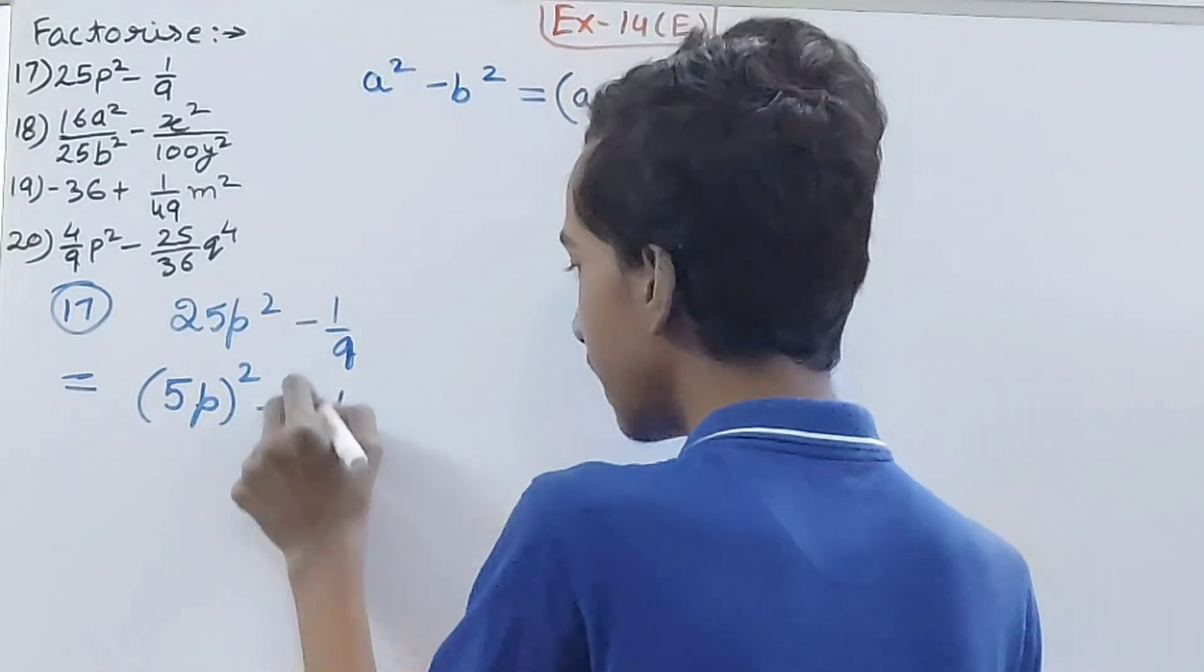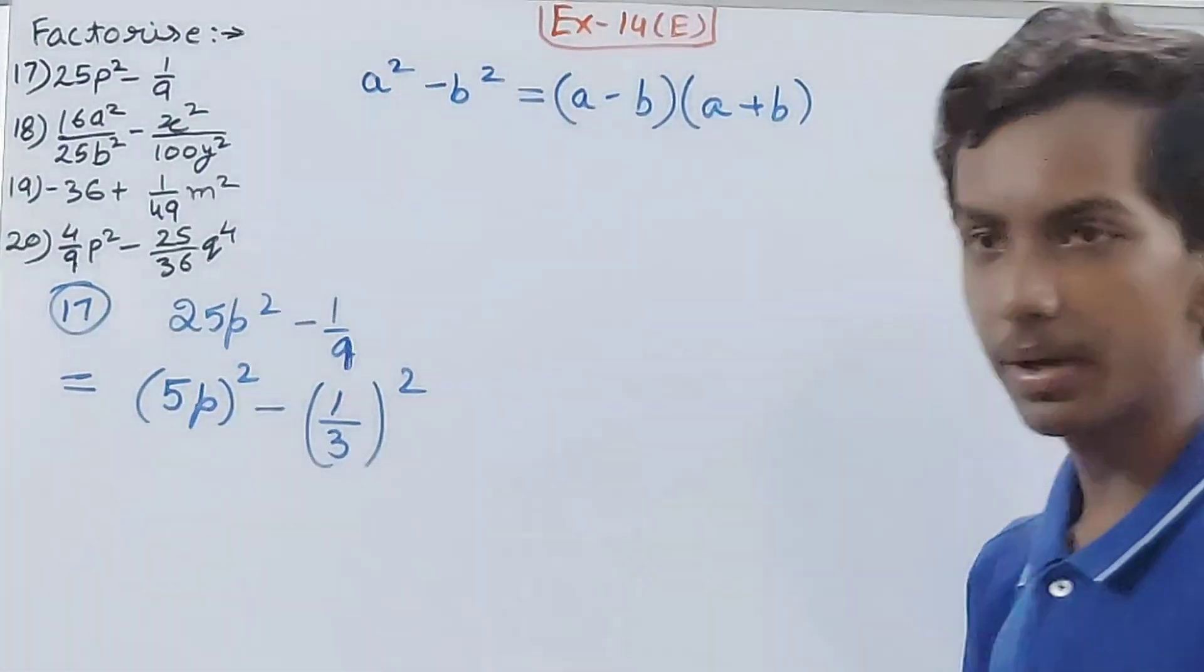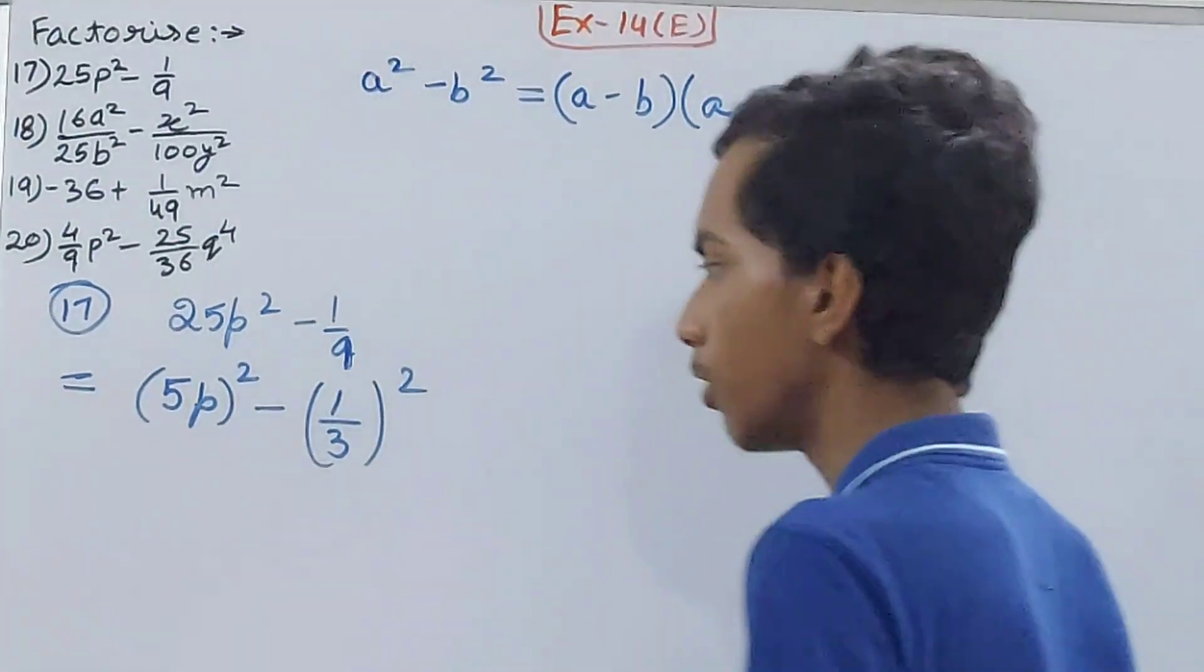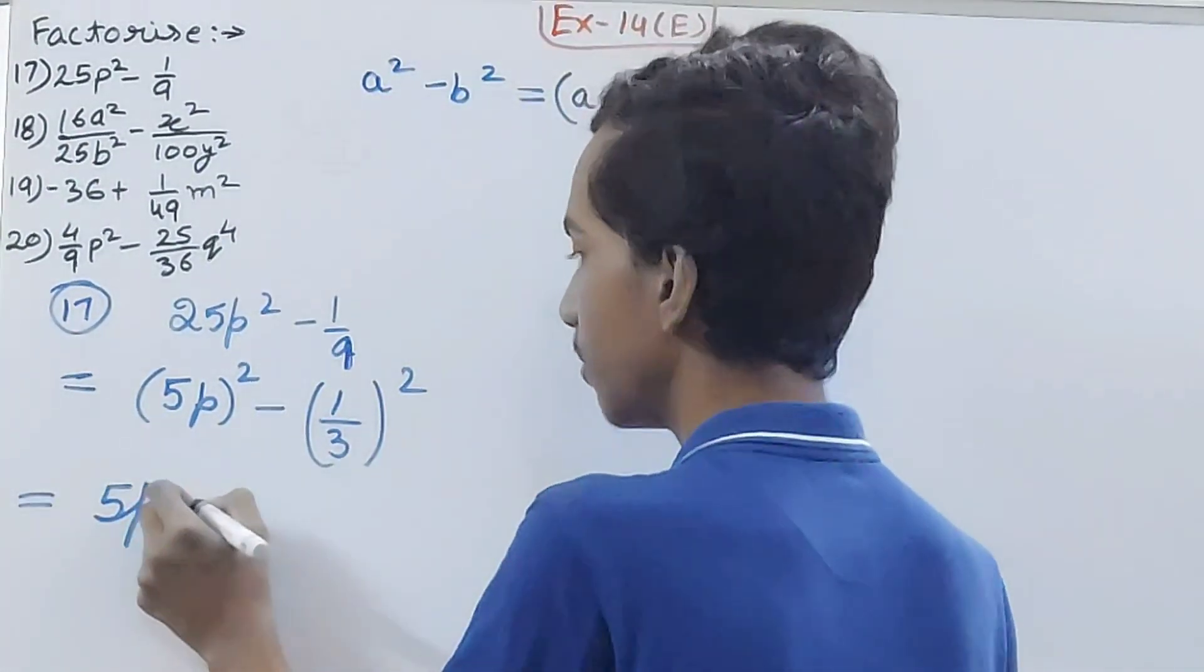Because (5p)² if you will open up you will find 25p², and (1/3)² if you will open up you will find 1/9. Now bring it to the original form, now your answer will be ready.